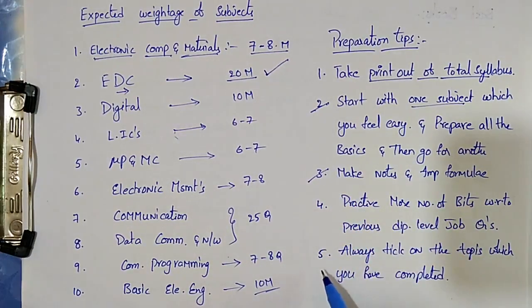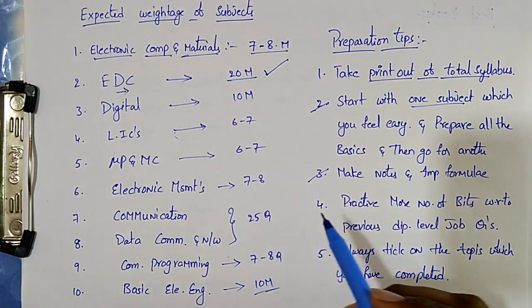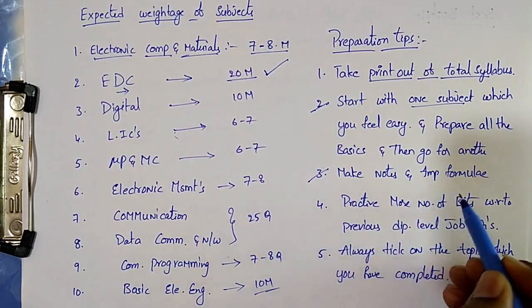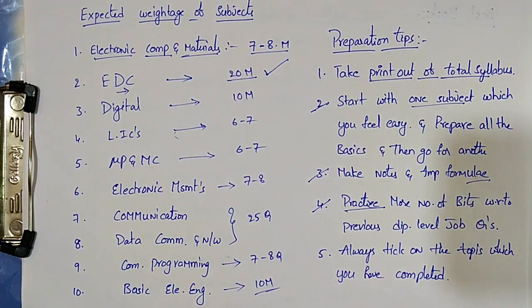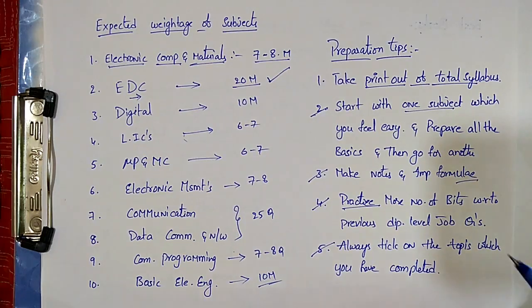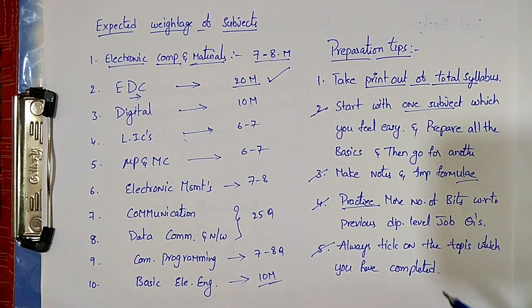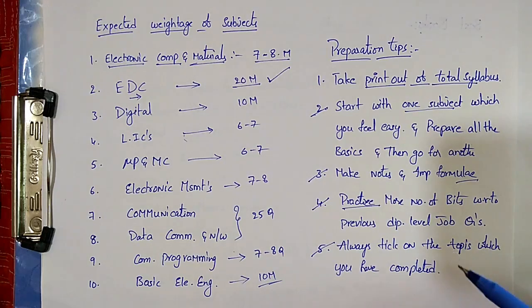Third important tip: make notes. Making notes is very important — it will be useful for quick revision. Note down important formulas. Fourth tip: practice. Practice makes man perfect. Practice a number of questions from previous diploma level job papers. Fifth tip: always stick to the topics you have already completed — this gives a clear idea of your preparation. Most importantly, don't think heavily about competition and vacancies — you need only one seat, not all. With full confidence, smart preparation, and practice, you can easily crack any competitive exam.